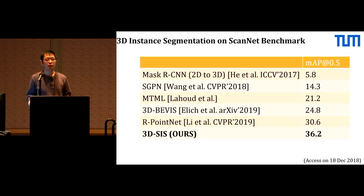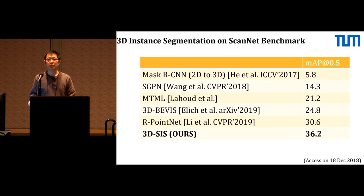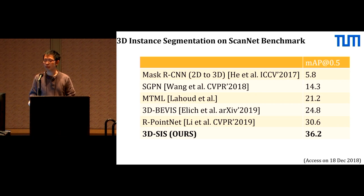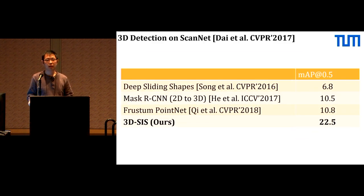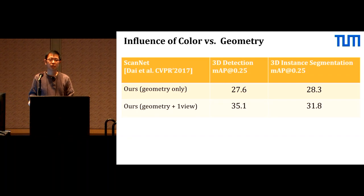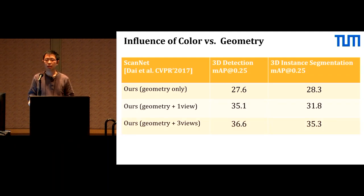We evaluate our method on a 3D instance segmentation benchmark and outperform previous and concurrent state-of-the-art methods, including a frame-based method like MaskRCNN projected from 2D to 3D, a bottom-up method like SGPN, and a top-down method like R.NET. We also evaluate on 3D detection, significantly outperforming the state-of-the-art. Our study shows that color projection effectively improves performance in both tasks.